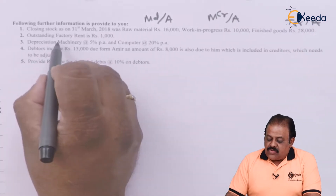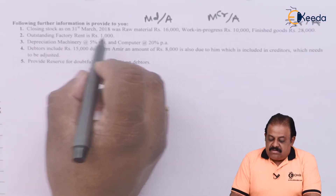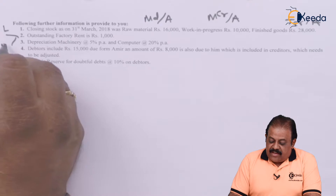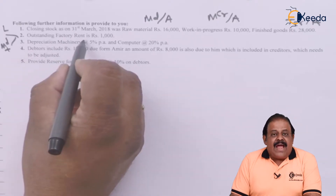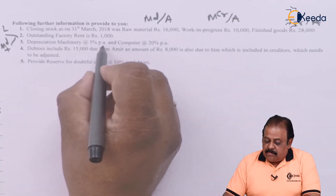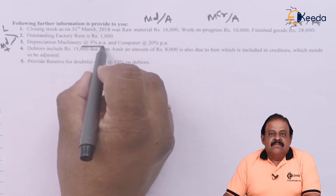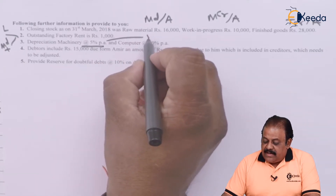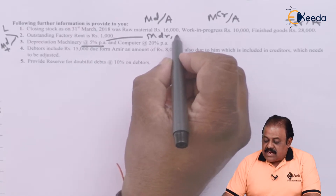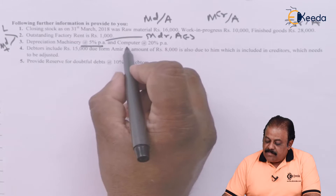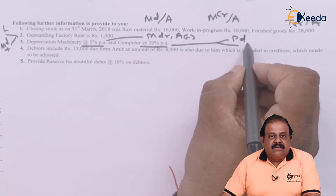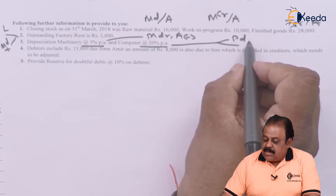Adjustment number two: outstanding factory rent 1,000. This will be recorded as a liability — outstanding expense. Second effect — manufacturing account debit. We will need to add this amount to the factory rent actually paid. Adjustment number three: depreciation on machinery at 5% — recorded in manufacturing account debit side as a factory expense. Second effect — deduct from asset side. Depreciation on computers at 20% — one effect profit and loss account debit, second effect deduct from computer on asset side.